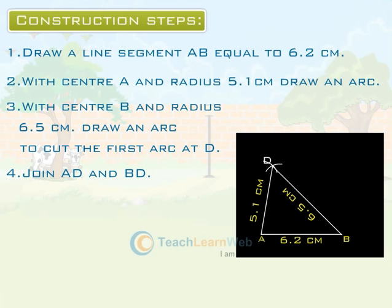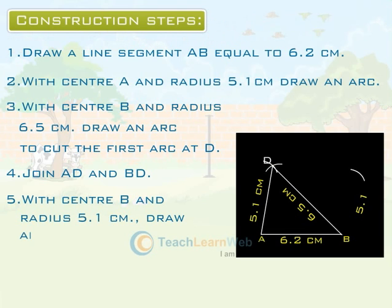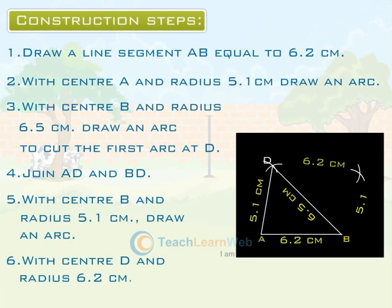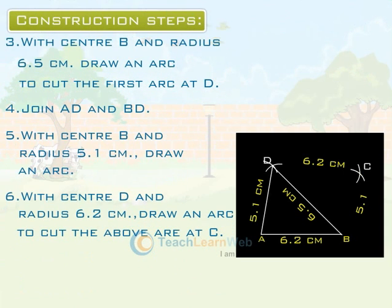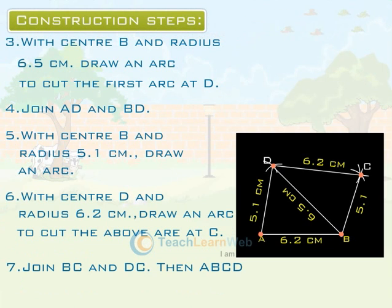Step 5: With center B and radius 5.1 cm, draw an arc. Step 6: With center D and radius 6.2 cm, draw an arc to cut the above arc at C. Step 7: Join BC and DC. Then ABCD is the desired parallelogram.